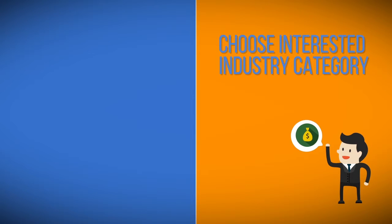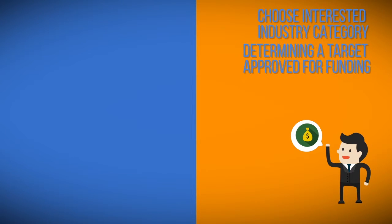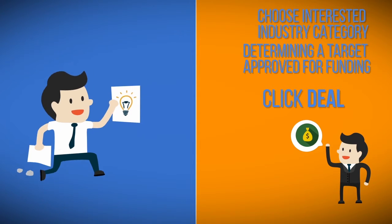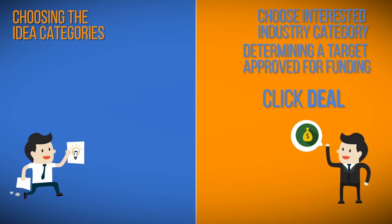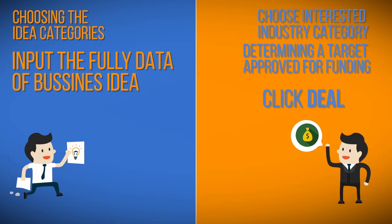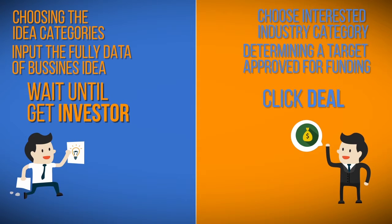After that, the investor determines an approved funding target and clicks the deal button, and the system will process it. For the idea owner, they choose the available idea categories, then input the full data of their business idea and wait to be matched with an investor.